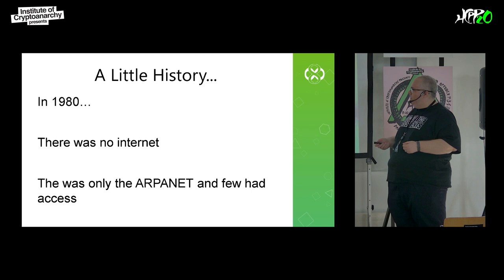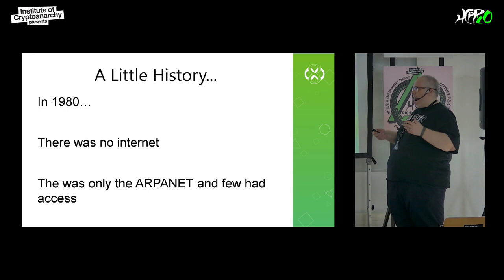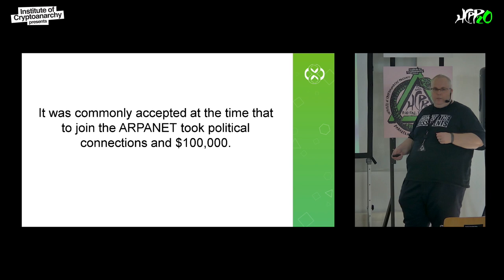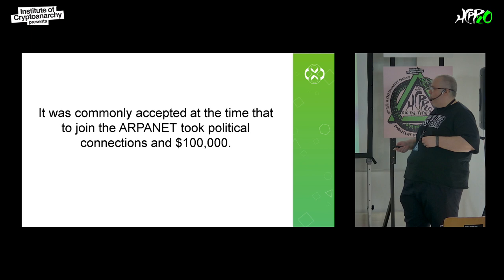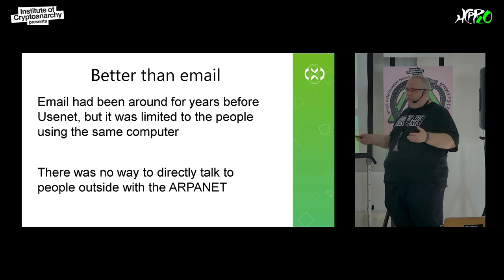A little history about Usenet. In 1980, there was no Usenet — there was only the ARPANET, and very few had access. The ARPANET was a program set up by the U.S. government between the military and certain universities on the U.S. coast, namely in Silicon Valley. These universities could talk to each other through the ARPANET and to the government for research projects. But unless you had political connections and about $100,000 — closer to half a million in today's money — you couldn't get a connection. Email was already around, but sending messages between schools was impossible unless you were already on the ARPANET.